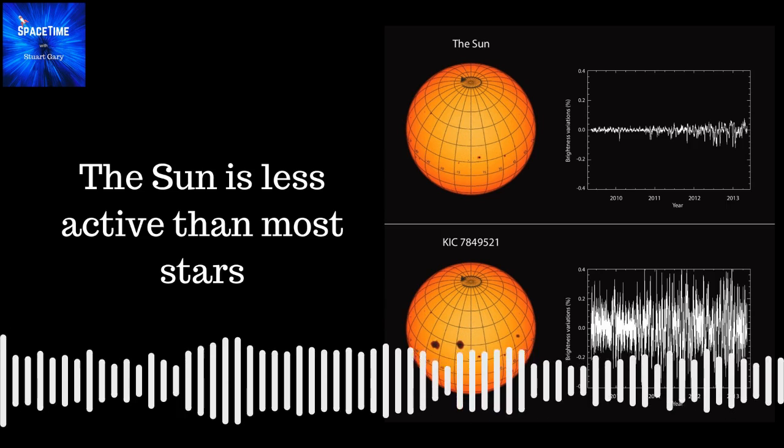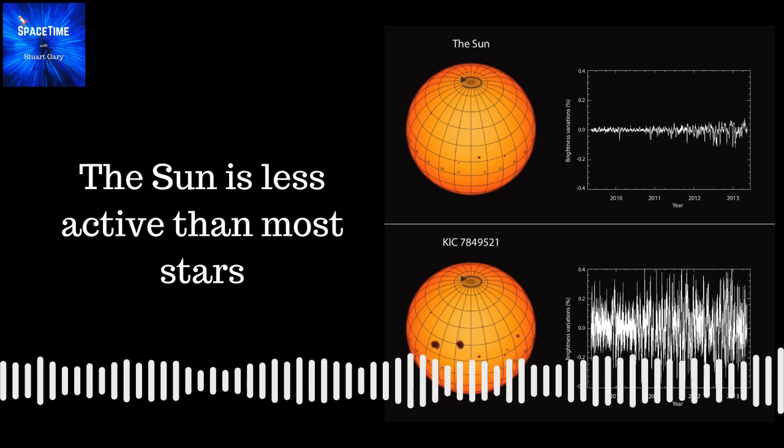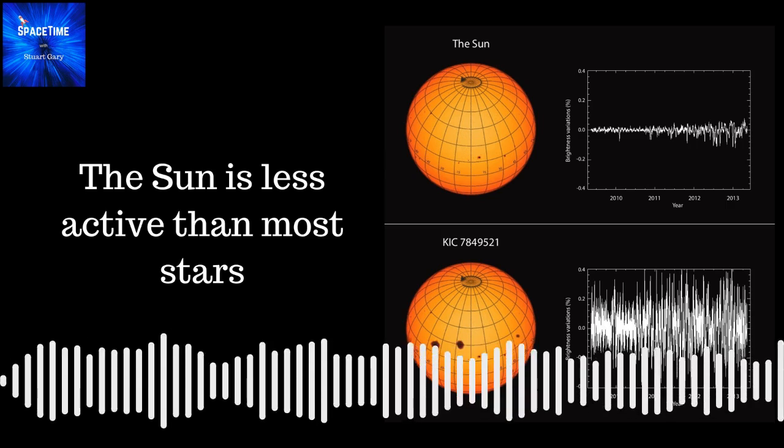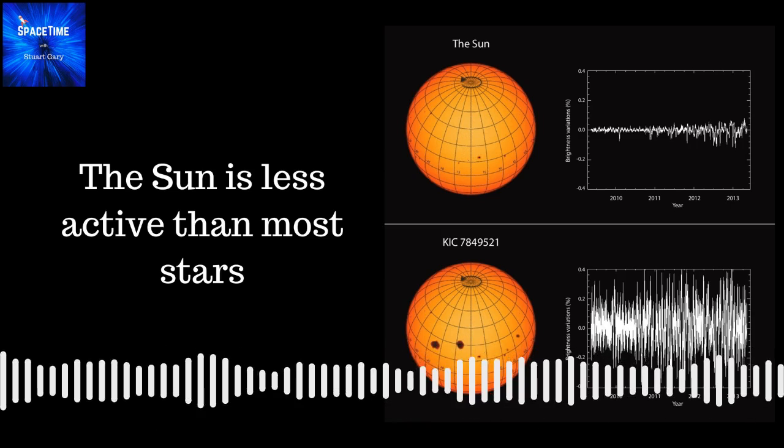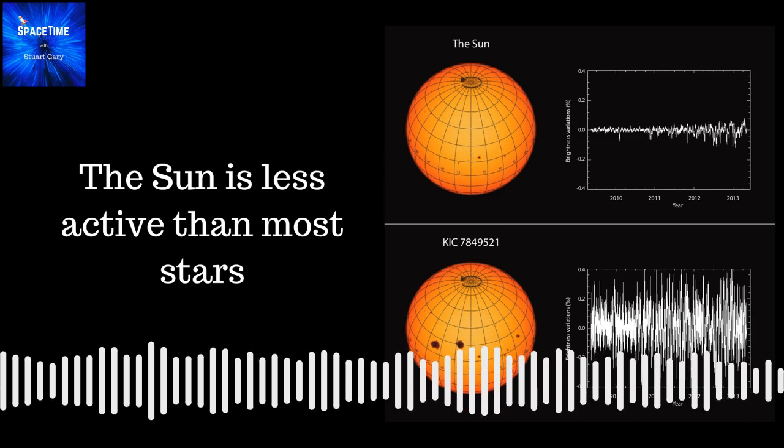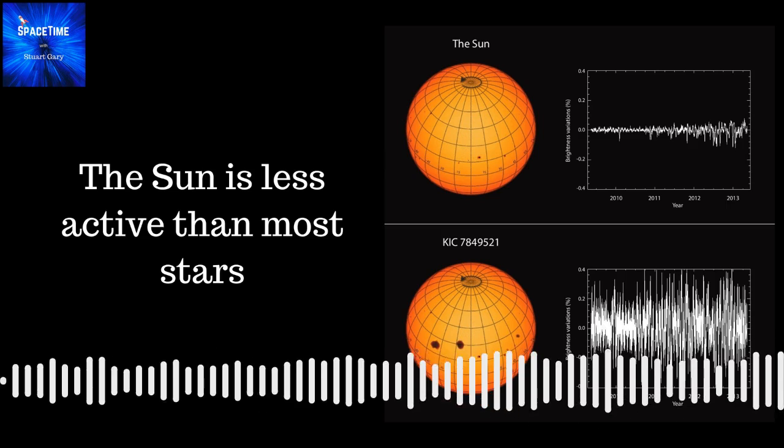From that, they could then infer the amount of sunspot activity taking place and, consequently, variations in solar brightness.